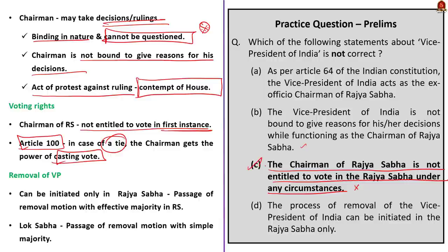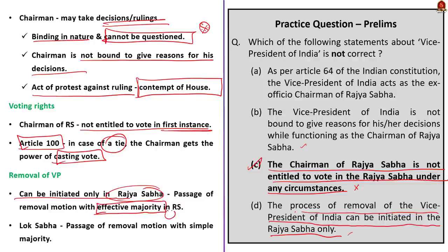We verify Option D: the process of removal of the Vice President can be initiated in the Rajya Sabha only — this is correct. The Rajya Sabha investigates charges against the Vice President, and if found guilty, the removal motion must be passed with effective majority in the Rajya Sabha. It is then sent to the Lok Sabha, which must pass it with a simple majority. The Lok Sabha has a role, but the process must be initiated only in the Rajya Sabha.